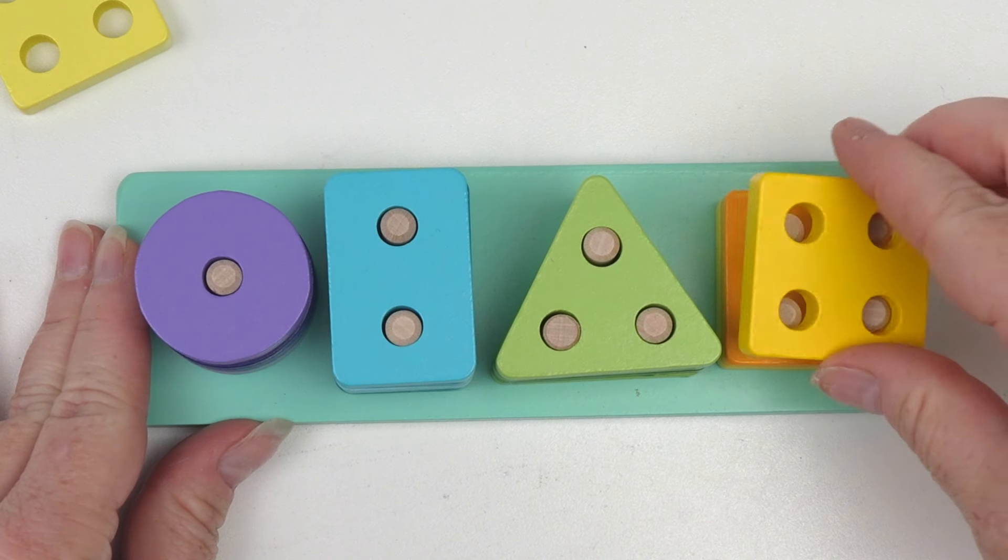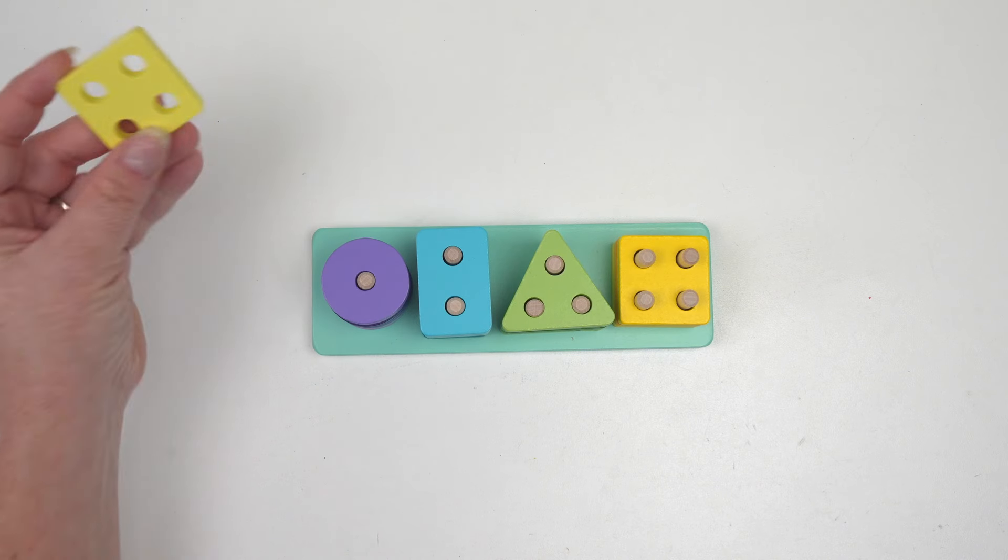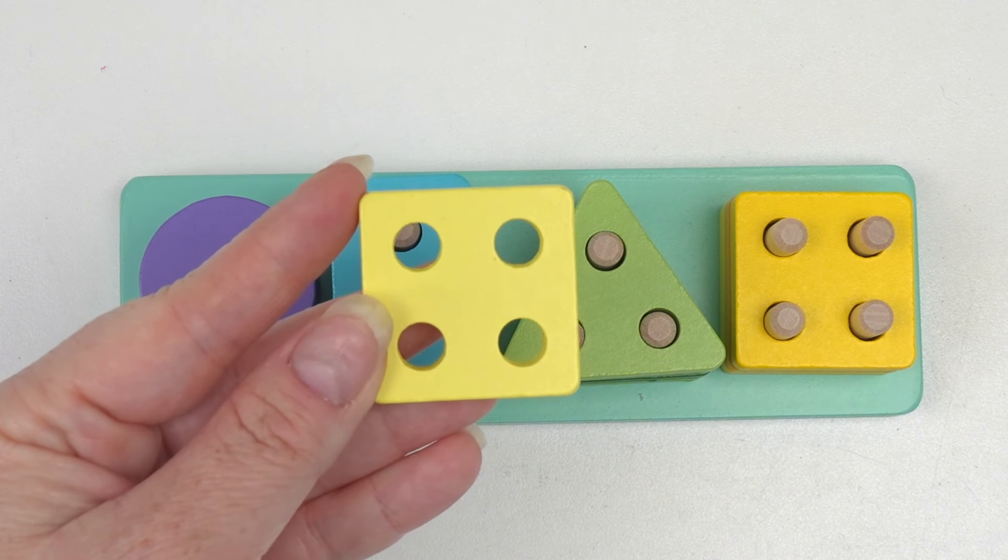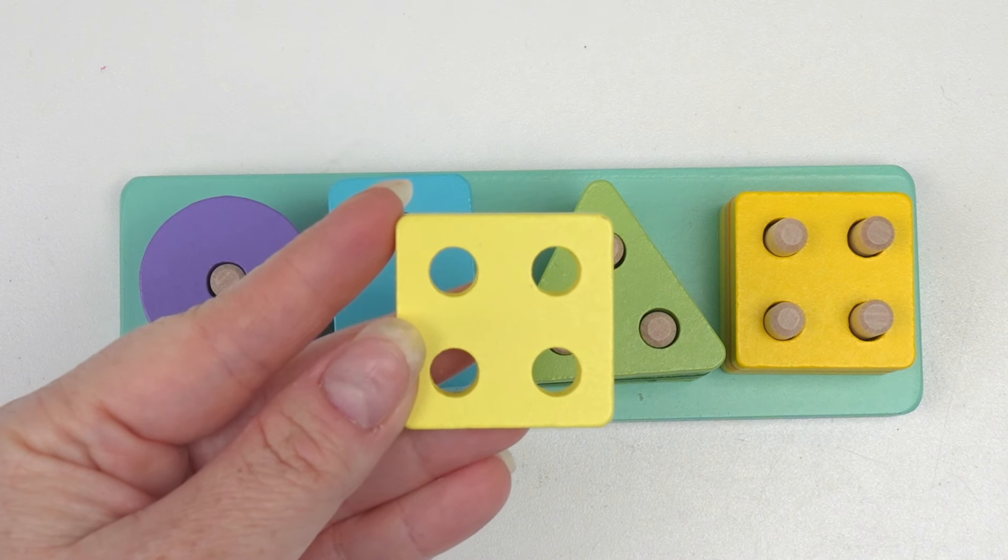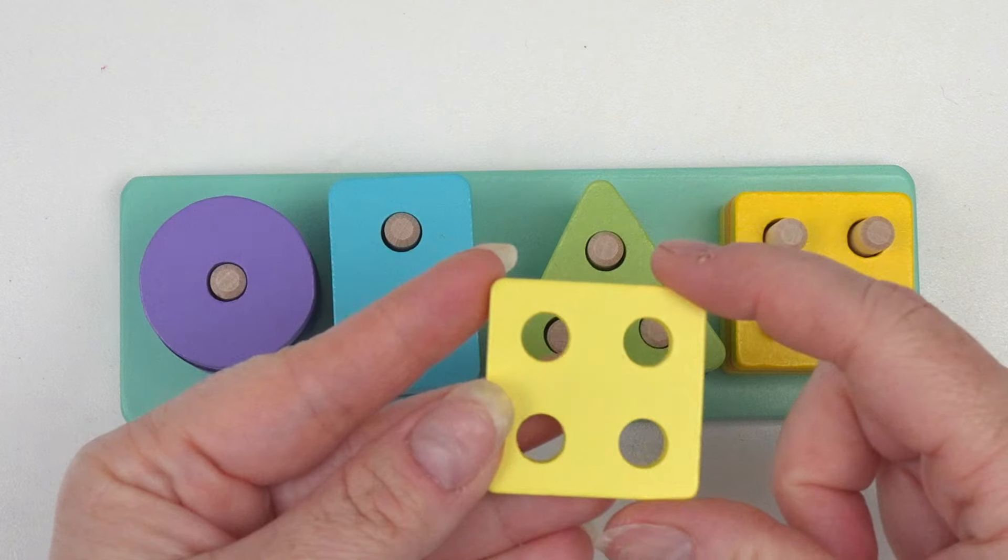Hmm. The square doesn't want to fit. There we go. And here's our last square. It has four holes and one, two, three, four sides.